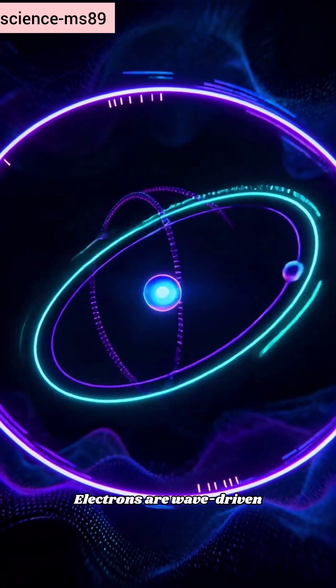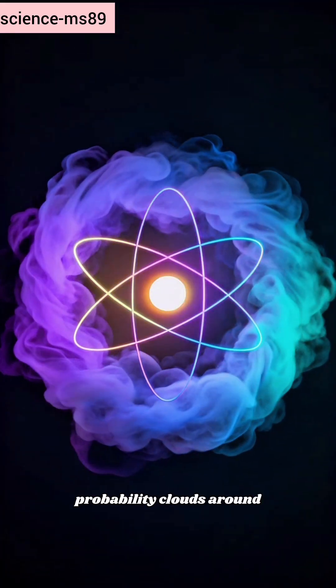Forget tiny planets. Electrons are wave-driven probability clouds around a nucleus.